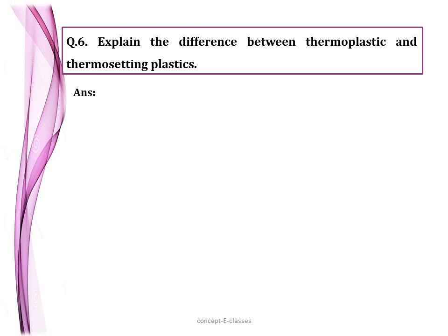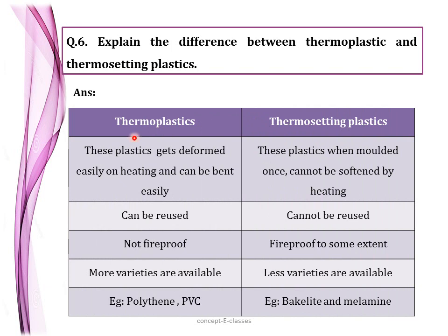Question number six: explain the difference between thermoplastics and thermosetting plastics. Thermoplastics get deformed easily on heating and can be bent easily, whereas thermosetting plastics, once molded, cannot be softened by heating. Thermoplastics are not fireproof, whereas thermosetting plastics are fireproof to some extent. Large varieties of thermoplastics are available, while fewer varieties of thermosetting plastics exist. Examples of thermoplastics: polythene and PVC. Examples of thermosetting plastics: Bakelite and melamine.